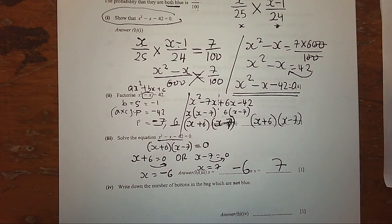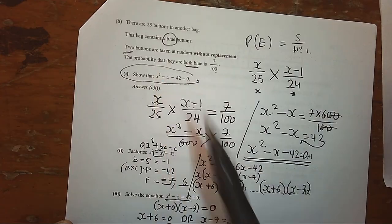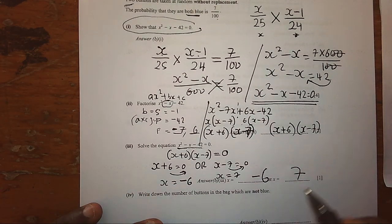However, since X is representing the number of buttons and we cannot have negative buttons, we shall take our buttons to be 7.